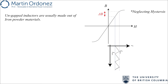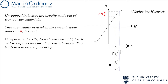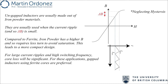Ungapped inductors are usually made of iron powder materials. They are used when the flux swing is small and the operating frequency is not very high, usually in the range of a few tens of kHz. Compared to ferrite materials, they have a higher saturation level, typically around 1 to 1.5 tesla. This allows for fewer turns to avoid saturation and usually leads to a more compact inductor. For large current ripples and high switching frequencies, core loss becomes significant, and gapped inductors using ferrite cores are preferred.